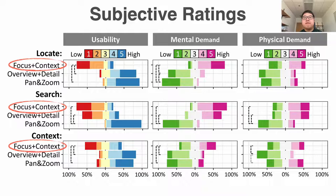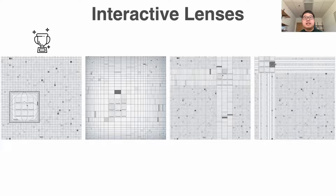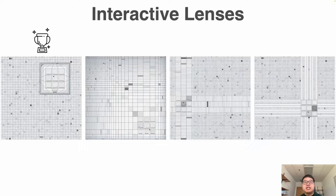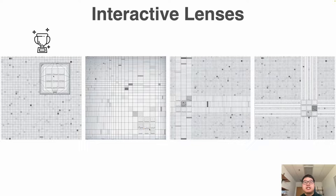In summary, we conducted a systematic evaluation of interaction techniques for revealing the details in multivariate matrix visualizations. We found within the tested lenses, the fisheye lens was the winner. When comparing the best performing lens to overview plus detail and pan and zoom, we found pan and zoom had the best performance. We believe our results can serve as empirical evidence when people need to select interaction techniques for multivariate matrix visualizations. Thank you very much for your attention.